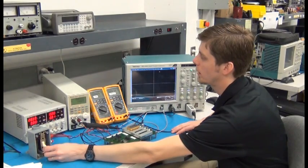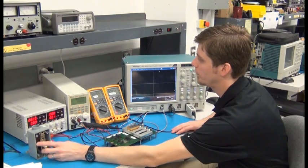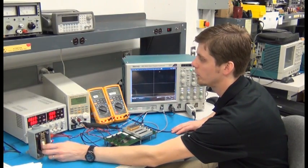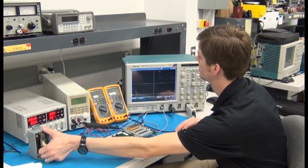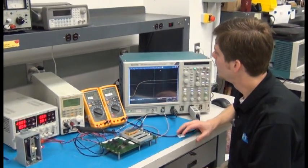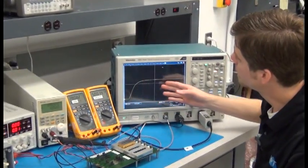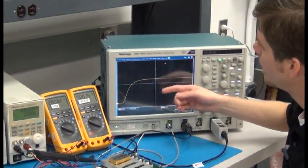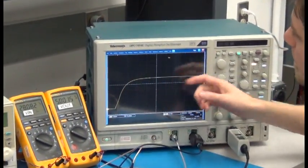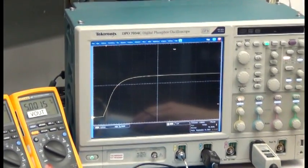So first, I'm going to apply the 28-volt input voltage with no load on the converter. We can see a nice soft start waveform with no load. Vout comes up to 5 volts as expected.